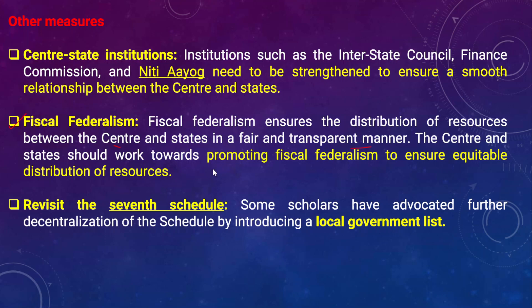Center and states should work towards promoting fiscal federalism for equitable distribution of resources. Another important measure is revisiting the Seventh Schedule, which contains the union list, state list, and concurrent list. More powers should be given to states. Some scholars have advocated further decentralization by introducing a local government list, in addition to the existing three lists, which would strengthen local governance.